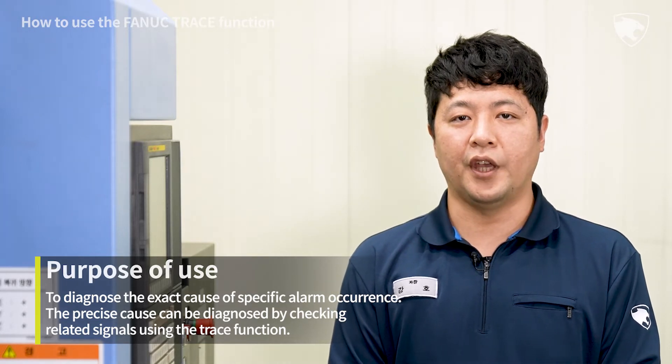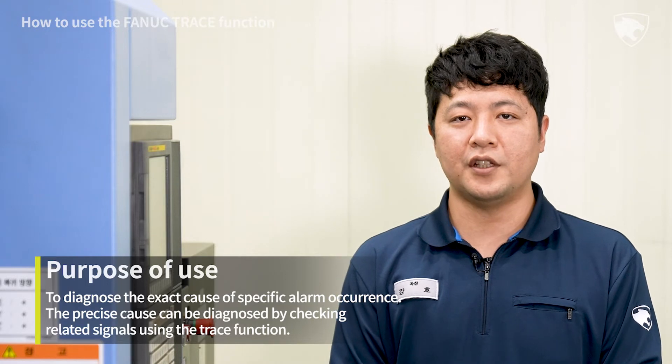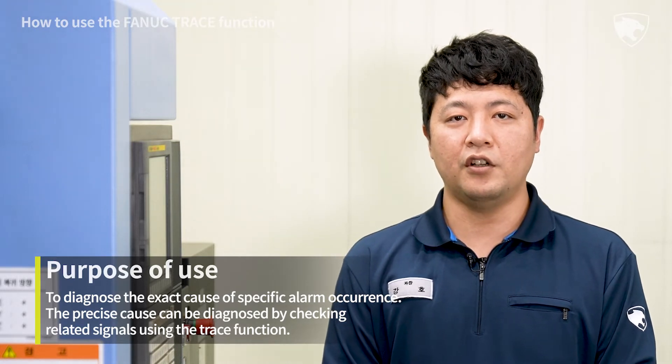The tracing function is used to set related signals for the purpose of diagnosing the cause precisely if a specific alarm occurs intermittently. If the alarm occurs after setting, the related signals are checked to diagnose the exact cause.